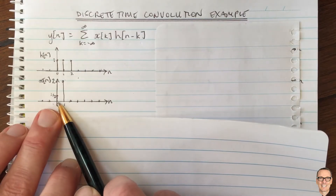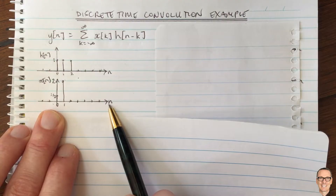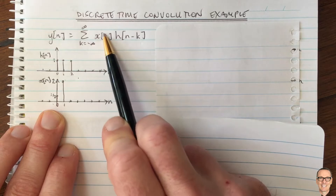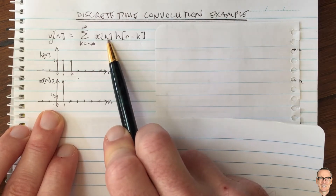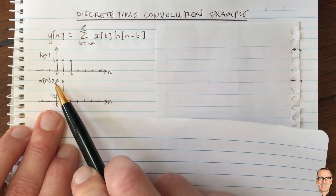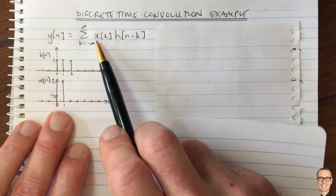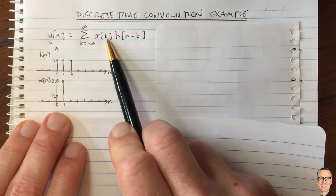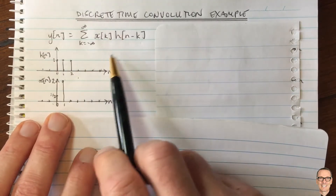There are only two times when x[k] does not equal zero. The signal is plotted as x[n] as a function of n, but if we want x[k] we just change the variable. The functional shape remains the same in both cases. So there are only two non-zero terms: x[0] and x[1], meaning there will be two terms in the summation.